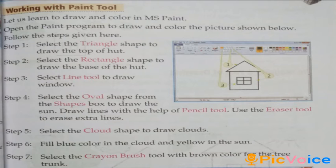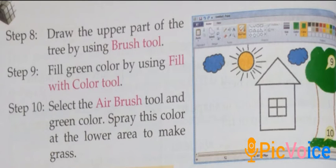Step 7, select the crayon brush tool with brown color for the tree trunk. Step 8, draw the upper part of the tree using the brush tool. Step 9, fill green color using the fill with color tool. Step 10, select the airbrush tool and green color, spray this color over the leaf area to make the brush effect.